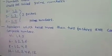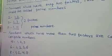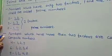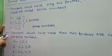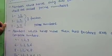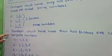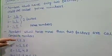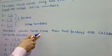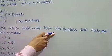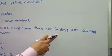So let's go to composite numbers. Numbers which have more than two factors are called composite numbers.